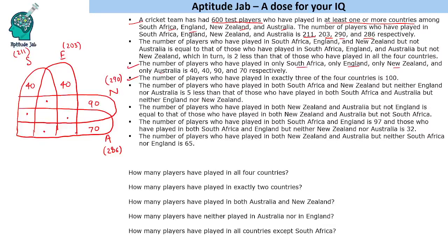The number of players who have played in both South Africa and England is 97 — this entire belt. Those who played in both South Africa and England but neither New Zealand nor Australia is 32. So the difference is that 97 includes all combinations with New Zealand or Australia, while 32 excludes them. The number of players who played in both New Zealand and Australia but neither South Africa nor England is 65.